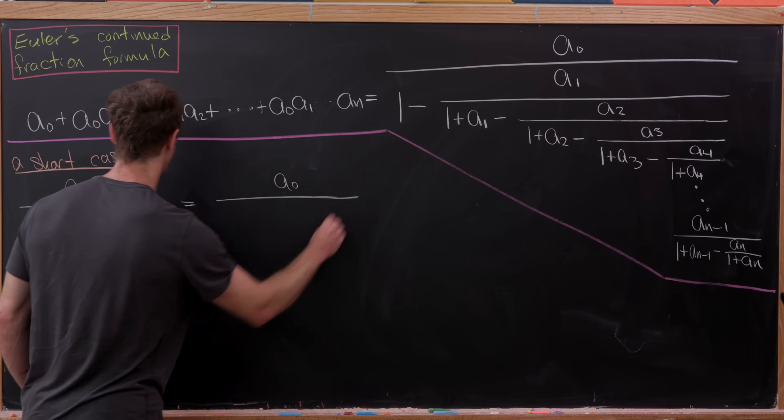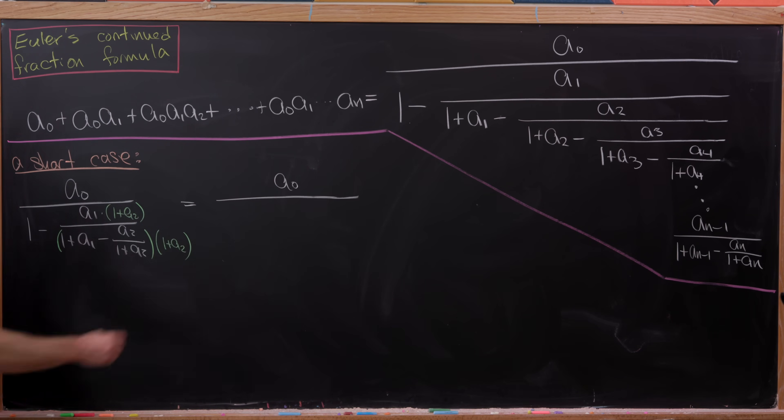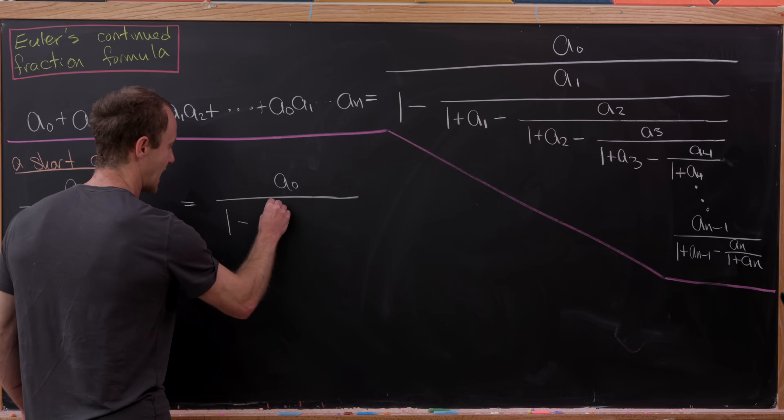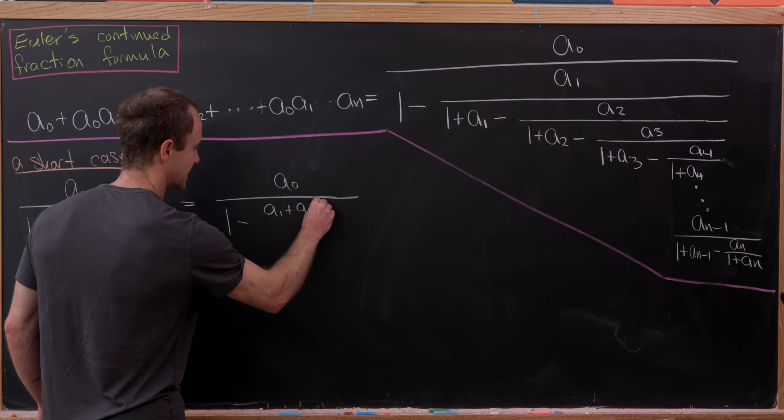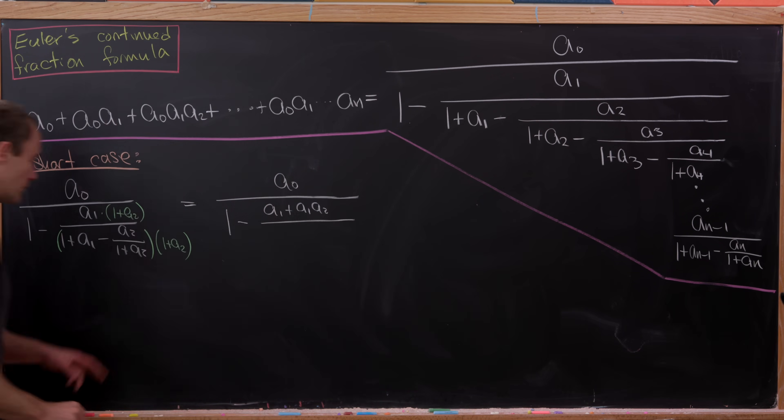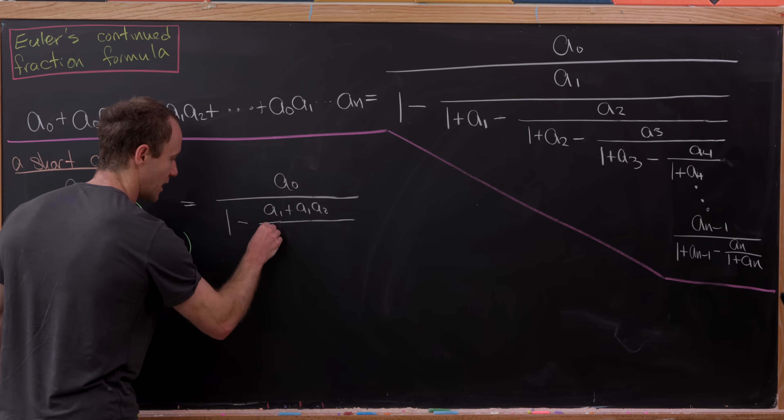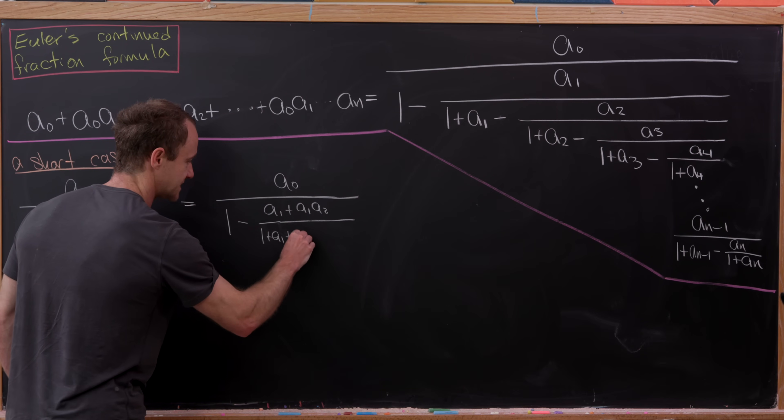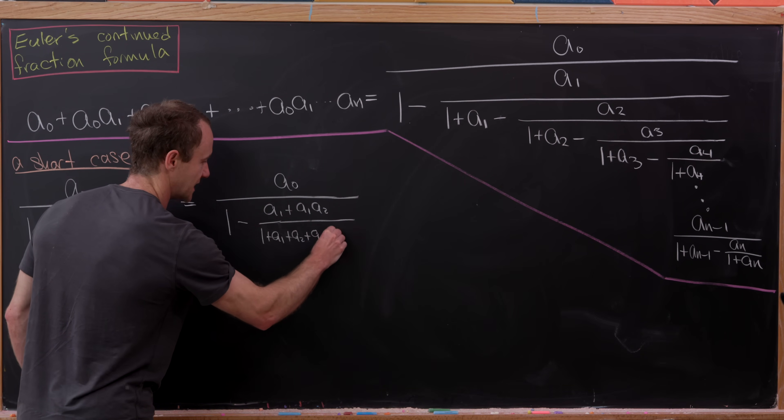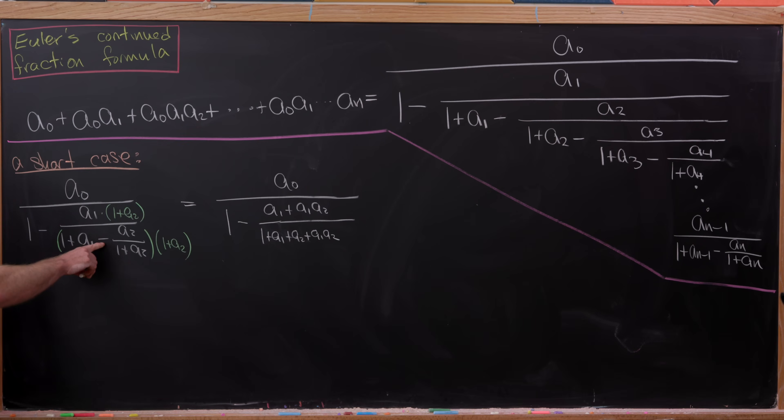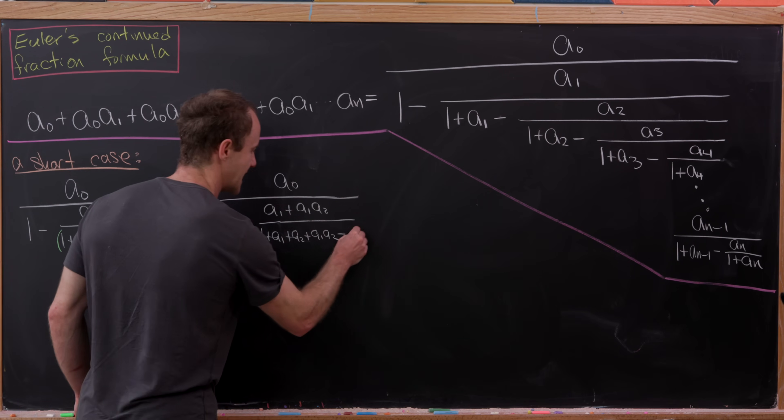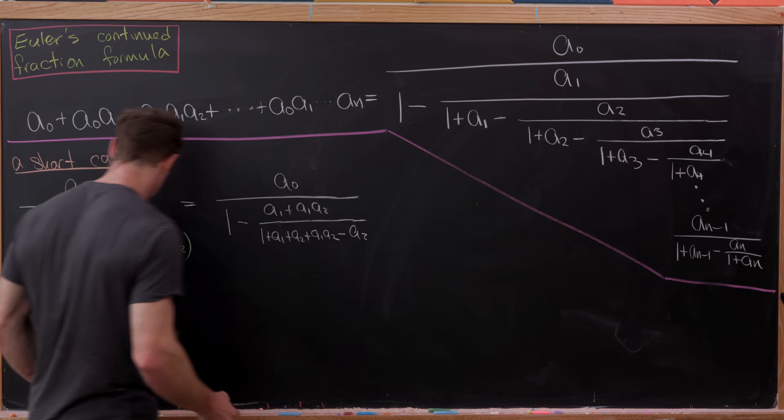So let's see what that leaves me with. So I still have a0 on top of everything, but now this will be 1 minus. So now I'll have a1 plus a1 times a2 over, let's see, multiplying this 1 plus a2 through to this 1 plus a1 will leave us with 1 plus a1 plus a2 plus a1 times a2. And then we have to subtract off simply a2. So we're left with something like that.